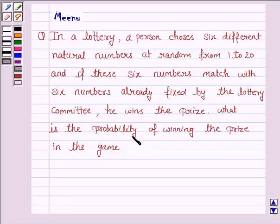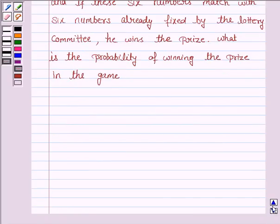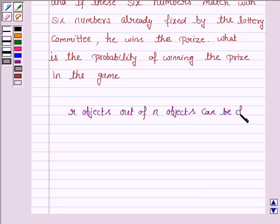What is the probability of winning the prize in the game? To solve this problem, we need to know the result of the combination which says that r objects out of n objects can be chosen in nCr ways.